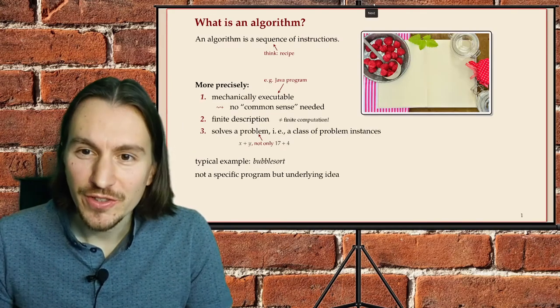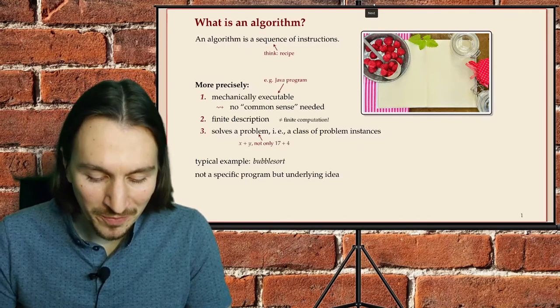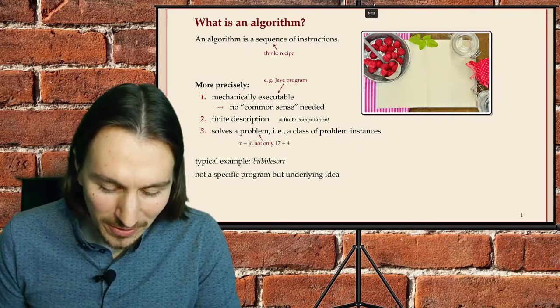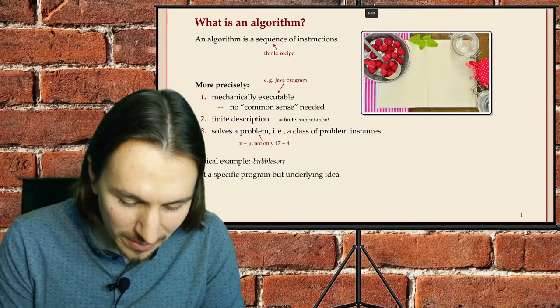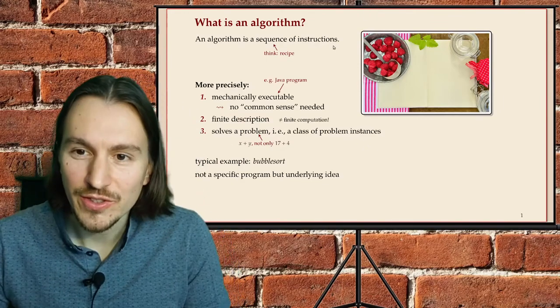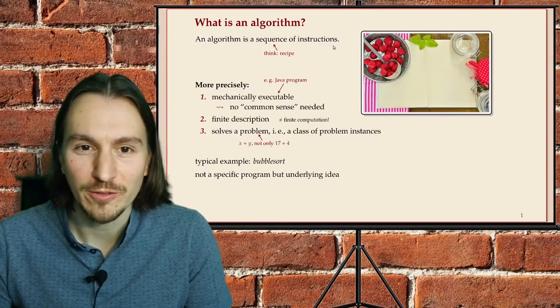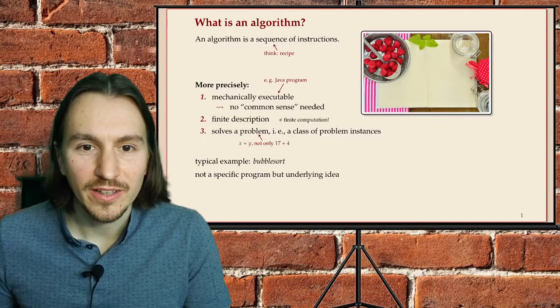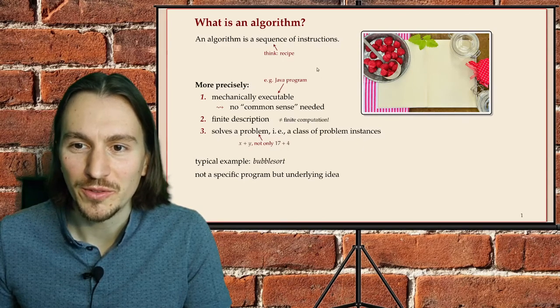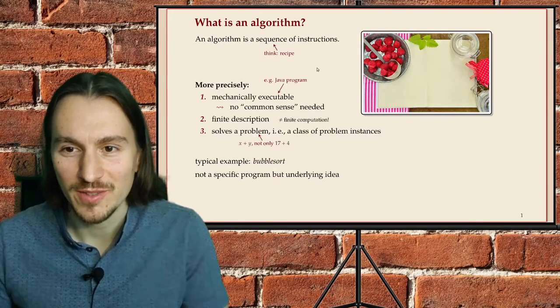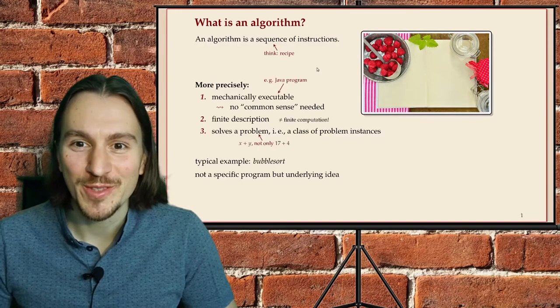So first, what is an algorithm to get started with? I don't want to dwell into too formal a definition at this early point. But for me, an algorithm is a sequence of instructions, like a cooking recipe. And so the way to think about this is you tell the computer what to do, and then it does it. That's a sequence of instructions.